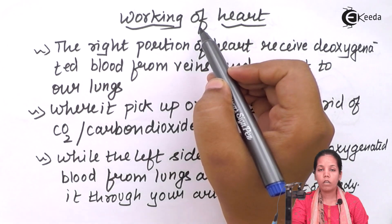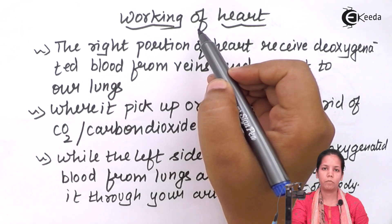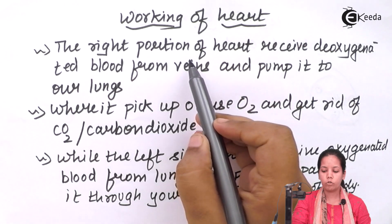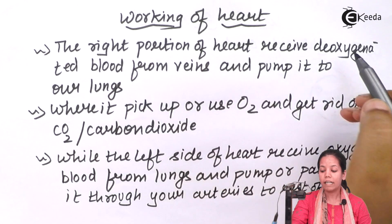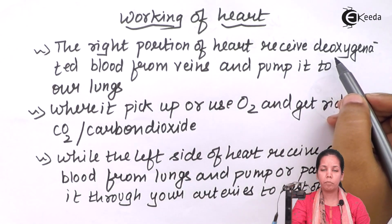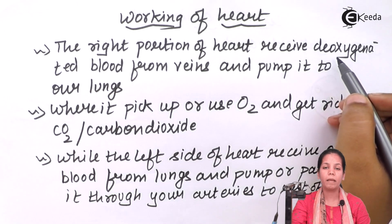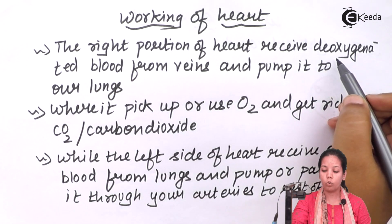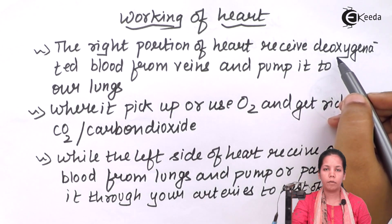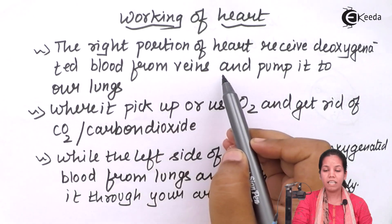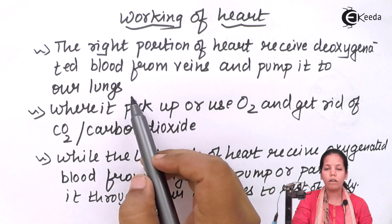The heart basically has four different chambers, and the right portion of the heart receives deoxygenated blood — blood which doesn't have oxygen. Oxygen is the crucial component required by all parts of the body, and it is the heart that makes the blood oxygenated. The right portion receives this deoxygenated blood from other parts of the body, and this blood from the veins is pumped into our lungs.